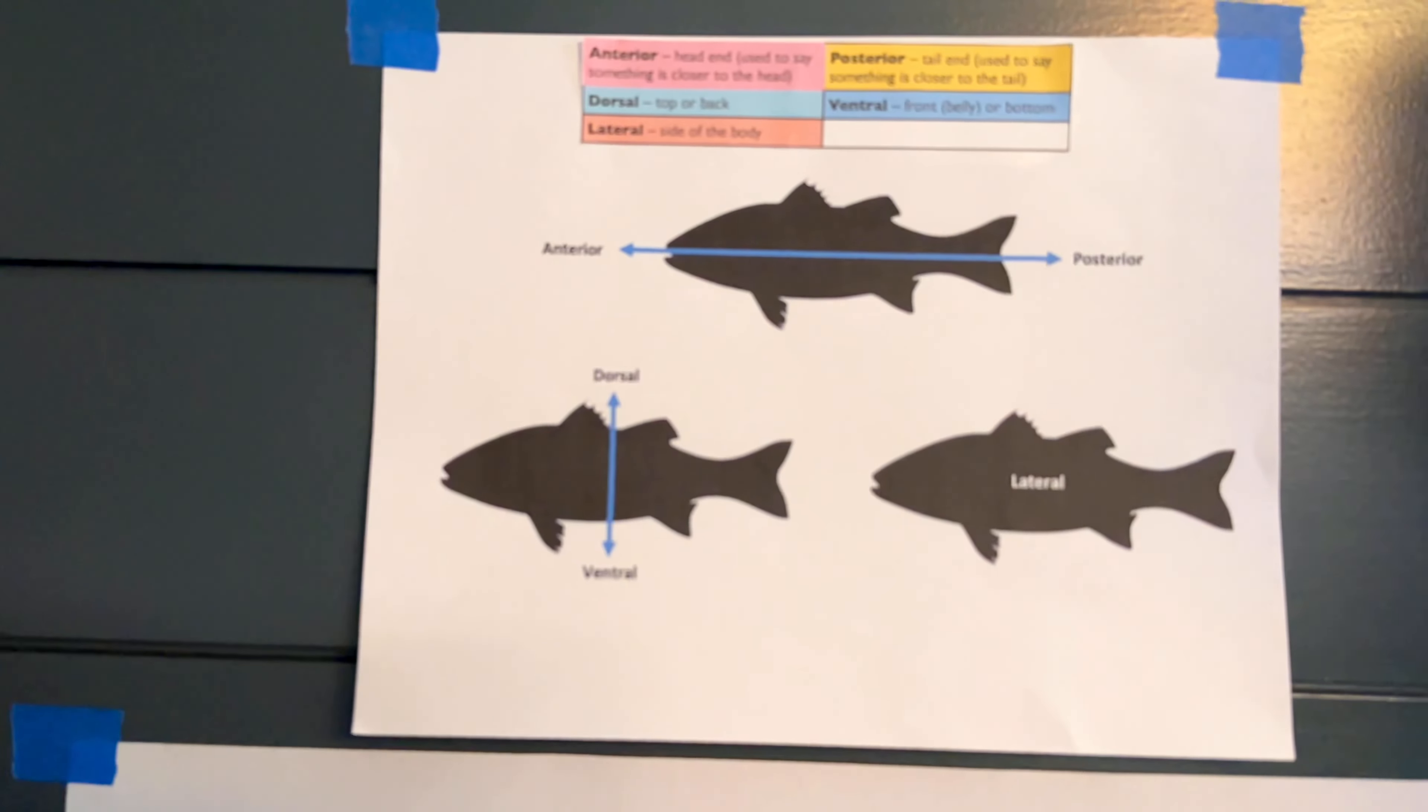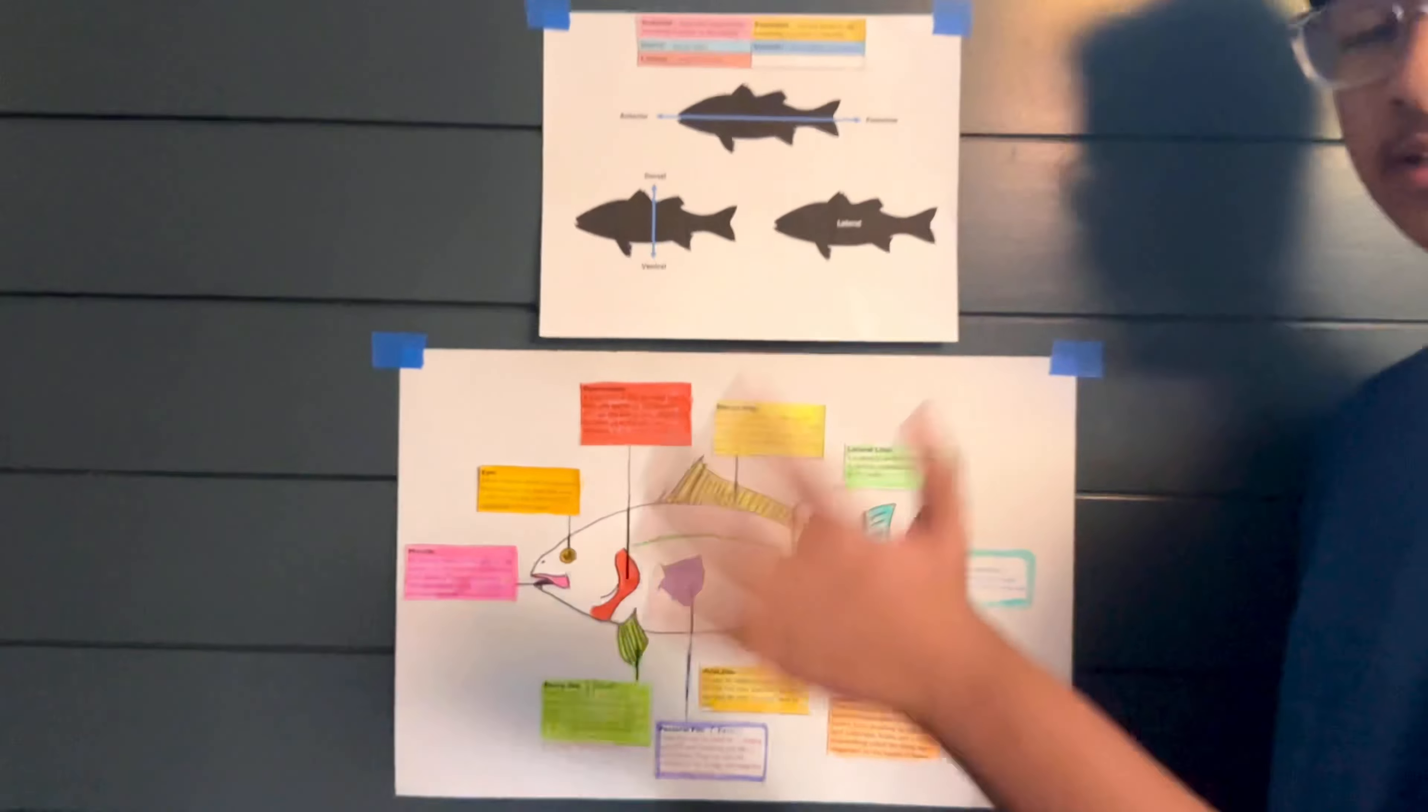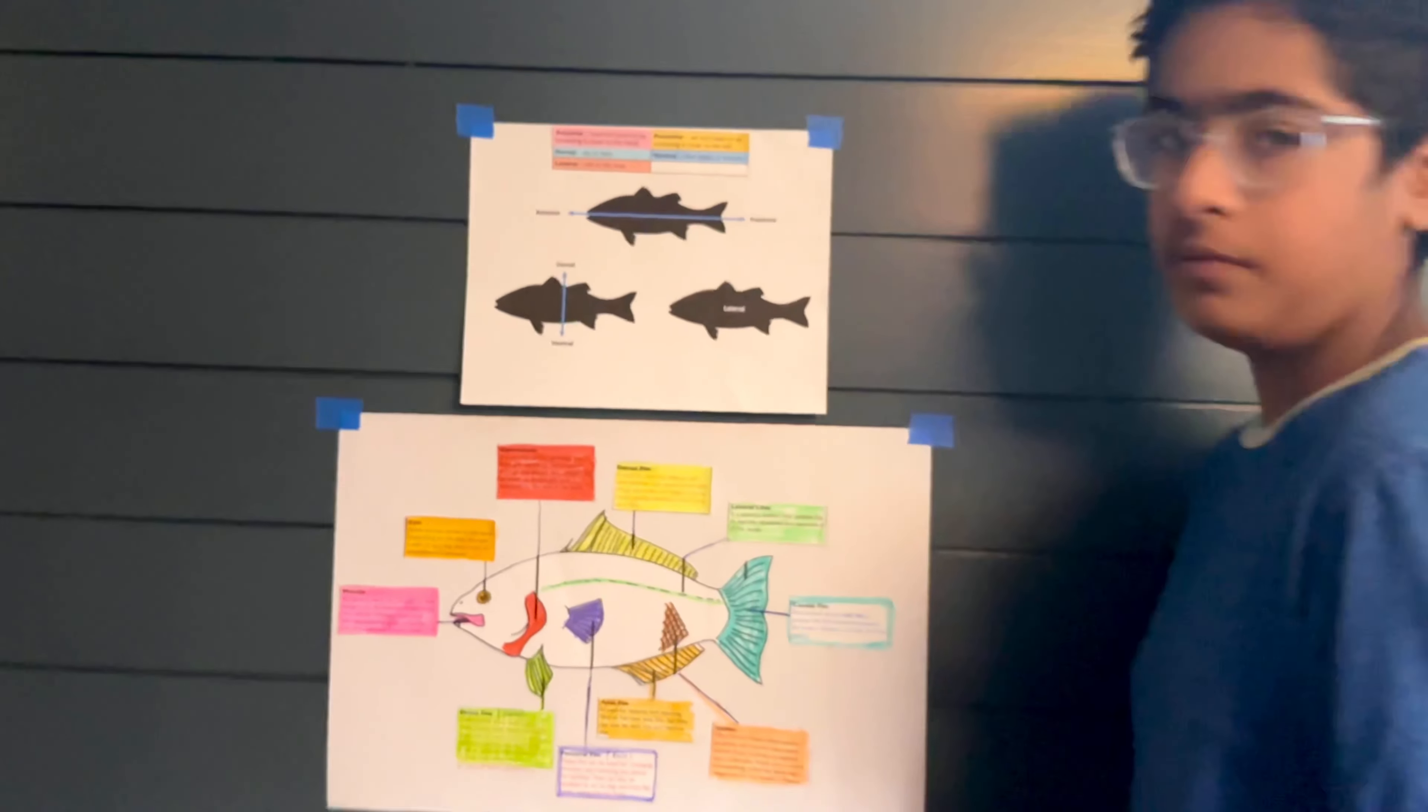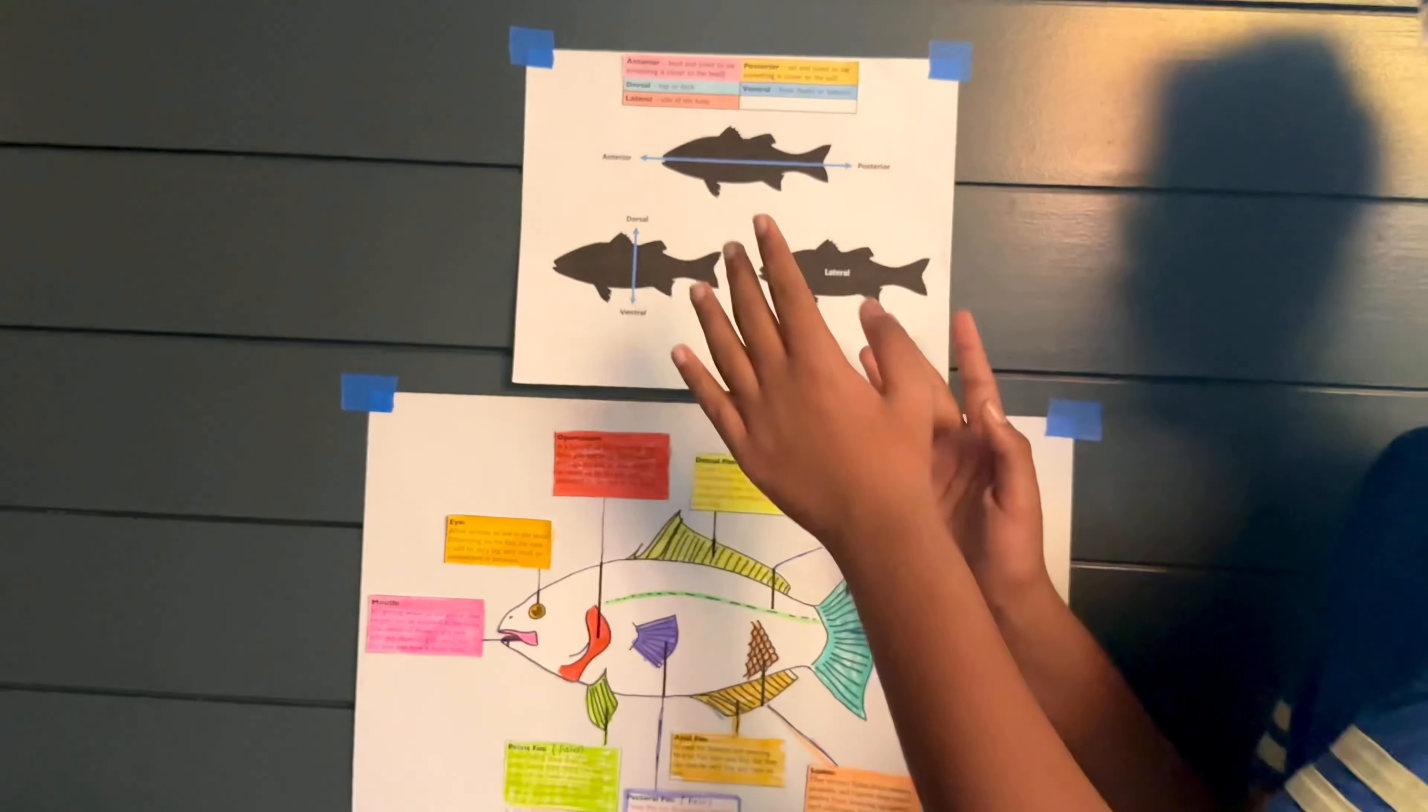We're going to be looking at the external part of the fish and what each part in its external layer does. Before we get into the anatomy, first, we want to talk about the positions of the fish.